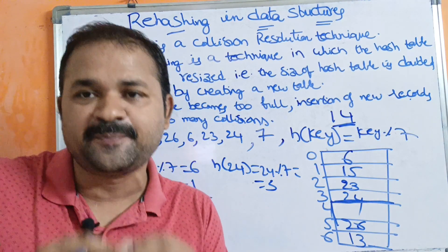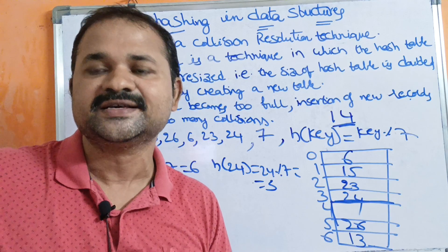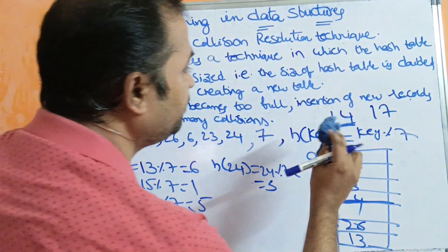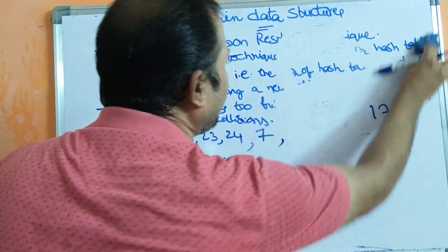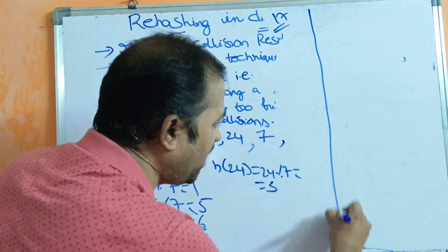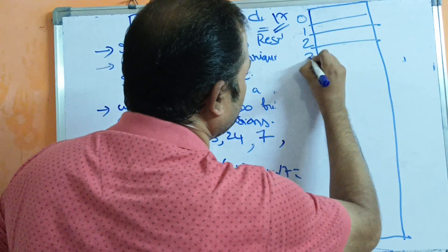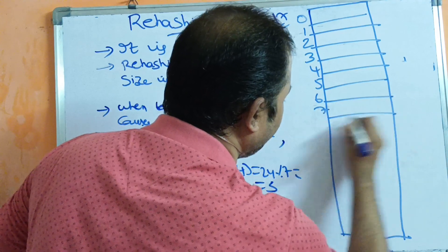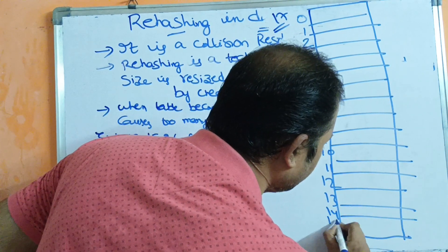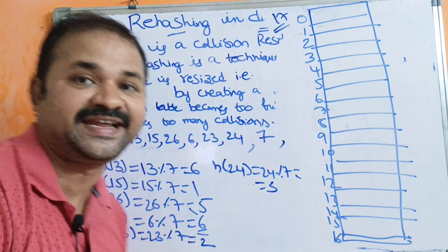The new size of the hash table should be a prime number greater than the doubled size. Since 14 doubled gives us 14, we check: 15 is not prime, 16 is not prime, but 17 is a prime number. So the new hash table size will be 17, with 17 locations from index 0 to 16. The new formula is H(key) = key modulo 17.